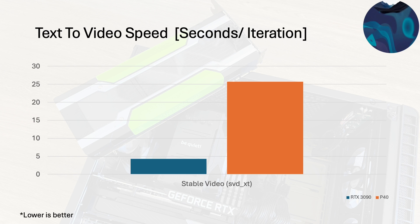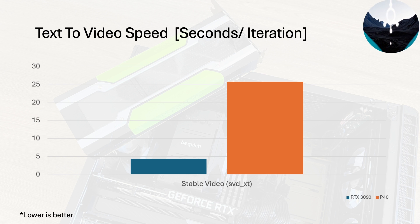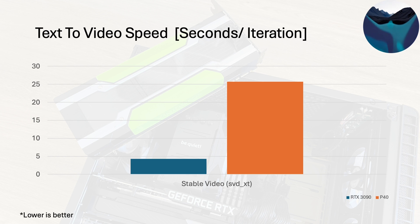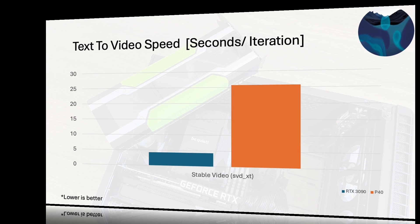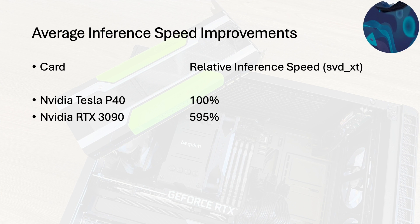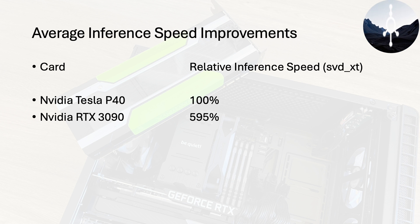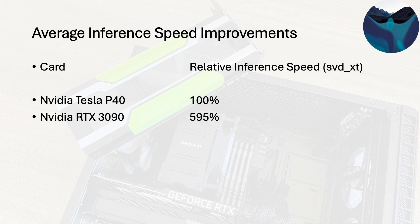Now let's go to text-to-video generation with Stable Video, where the RTX 3090 again rips apart the P40. Video generation is related to image generation, so this is basically something to be expected. The 3090 creates an iteration in 4.31 seconds while the P40 takes around 25.73 seconds, which is just a lot longer. On average this is a speed increase of around 595% — so around six times faster than the P40.